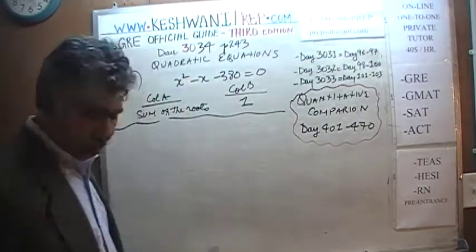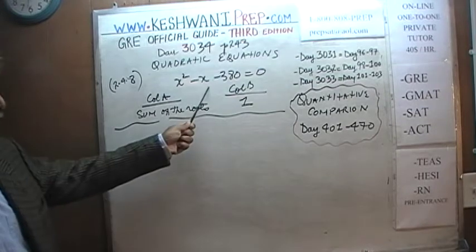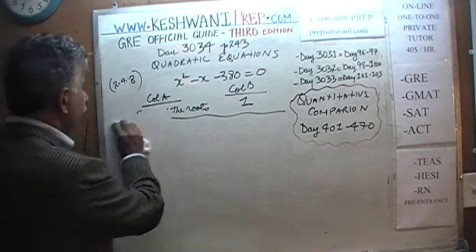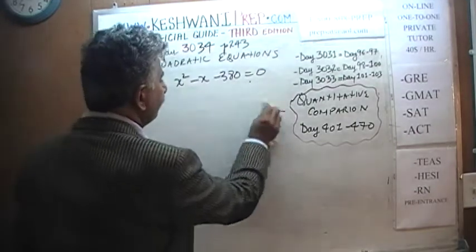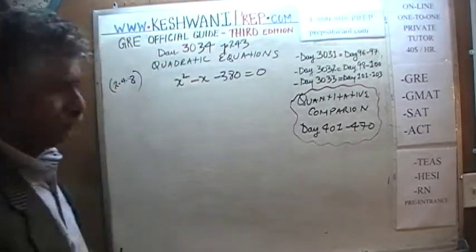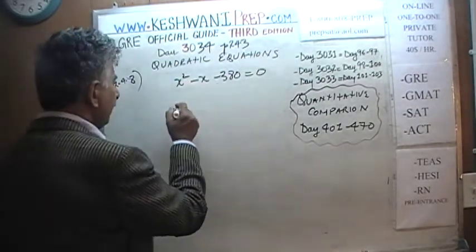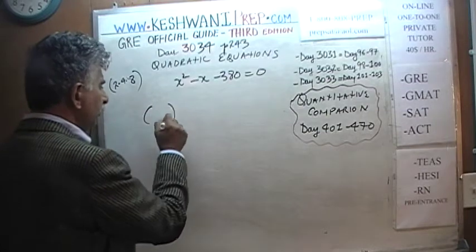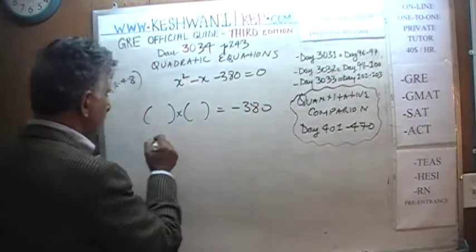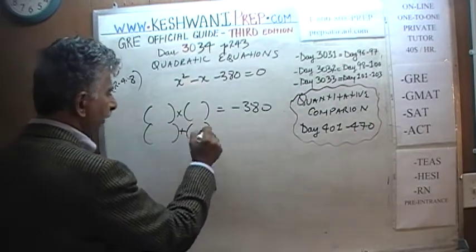Let's work on this one. We are asked to compare the sum of the roots of this quadratic equation versus one. So obviously we have to find the roots. We are looking for two numbers such that their product is negative 380, and whose sum has to be equal to negative 1.